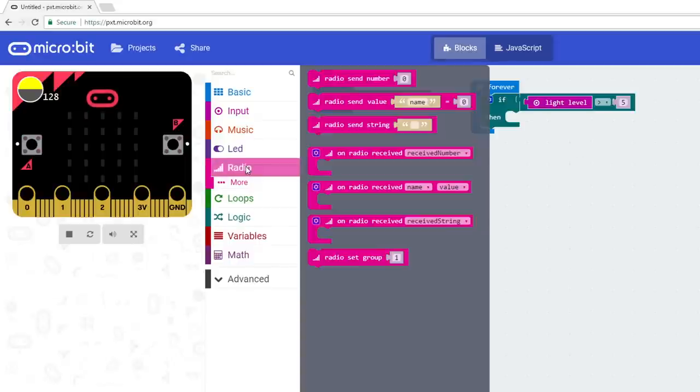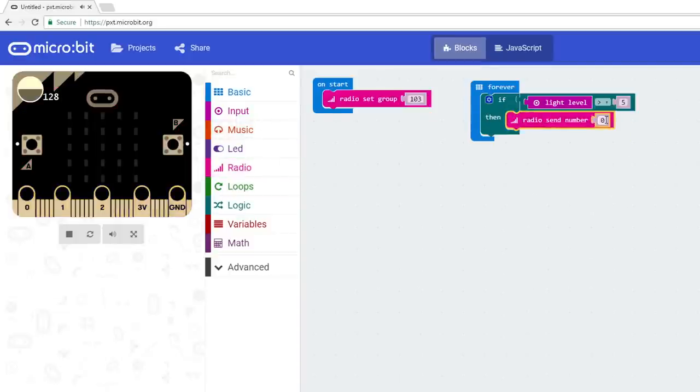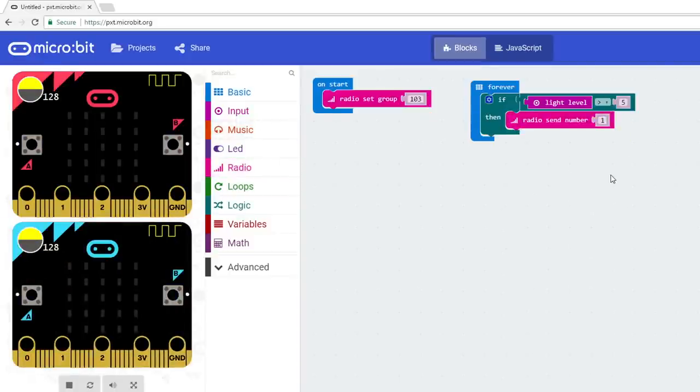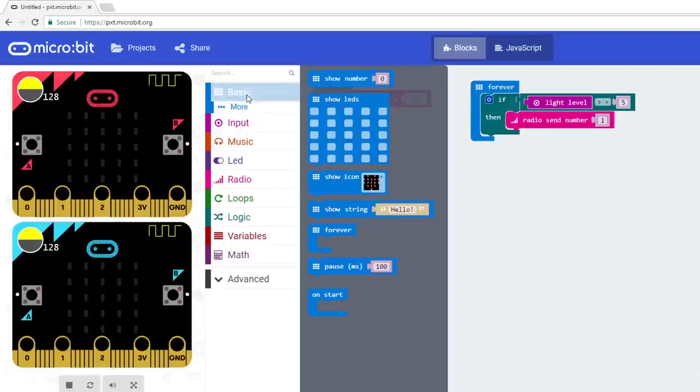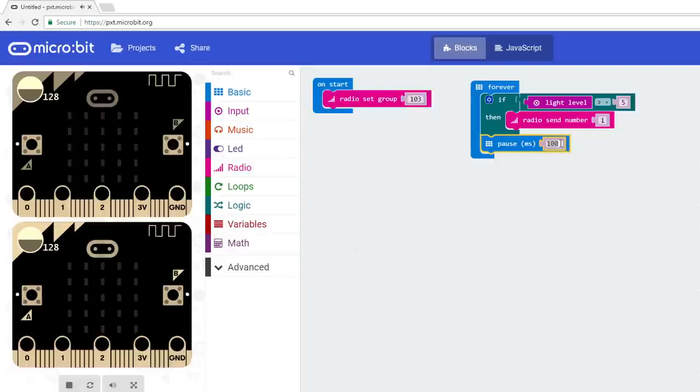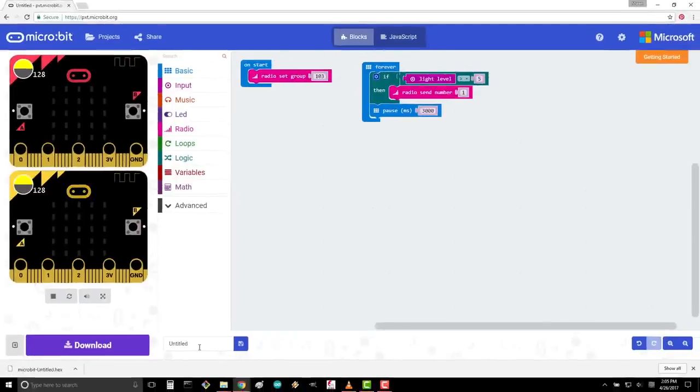From Radio, snap a RadioSend number block into the Then section. Change 0 to 1. Now, whenever our microbit detects light, it will send the number 1 across the radio to our receiver. This number could be anything, really. We just need to send something. Add a Pause block from Basic just after the If Then block. Change 100 to 3000 to make sure our sensor does not send a message more than once every 3 seconds. Change the name of the project to something like Alarm Sensor. Download this and copy it to your microbit.